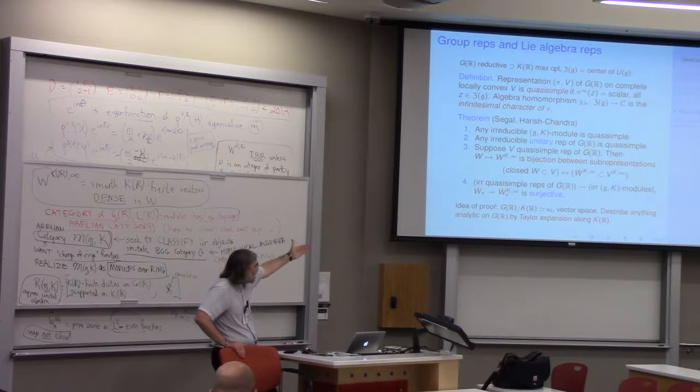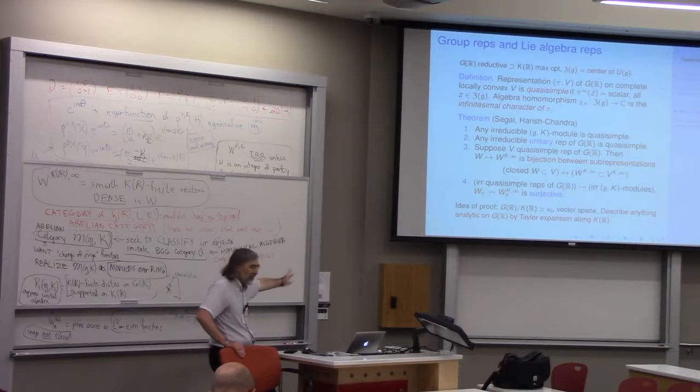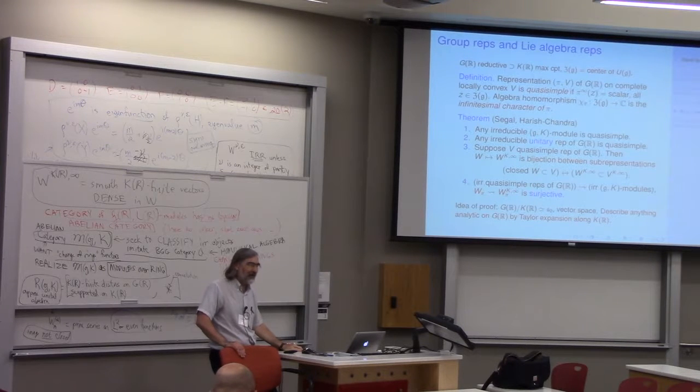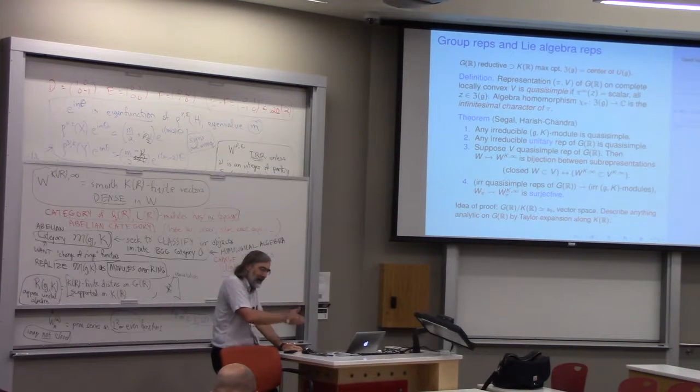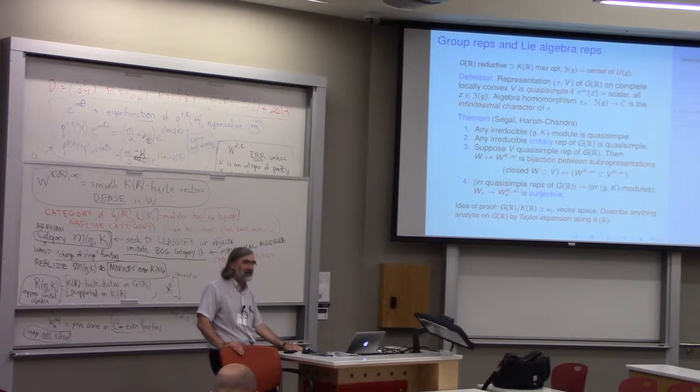I mean, in this theorem, you should say take vectors that are both K-finite and smooth, but at the end of the theory, you say that K-finite implies smooth.